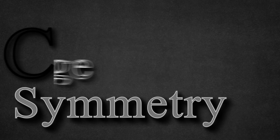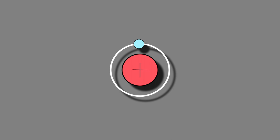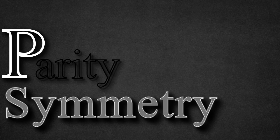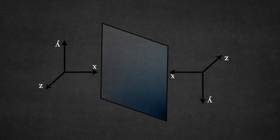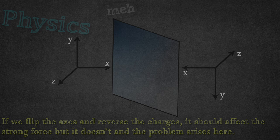The C stands for charge symmetry, which means that if the charges in this universe are switched, the theories of physics would still hold. The P stands for parity symmetry, which means that in the same way, if the direction of the axis is reversed, nothing would change for the laws of physics.